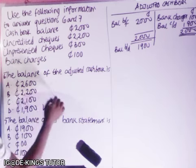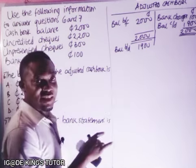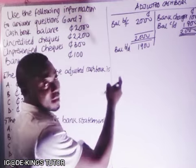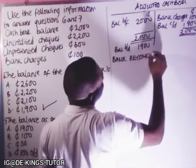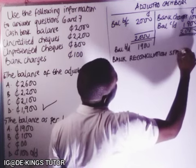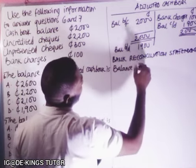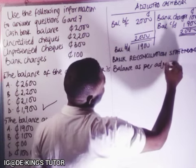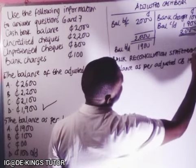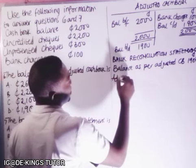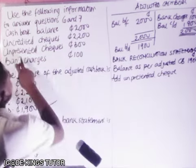For question seven — the balance as per bank statement — we now prepare the bank reconciliation statement. We start with the balance as per adjusted cash book, which is 1,900 cedis.